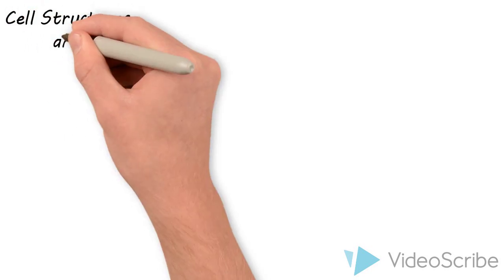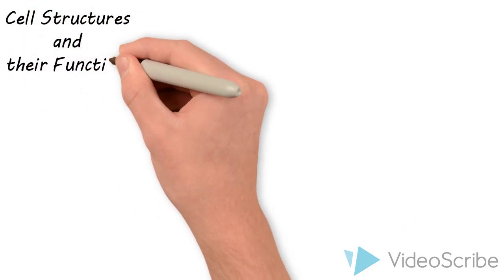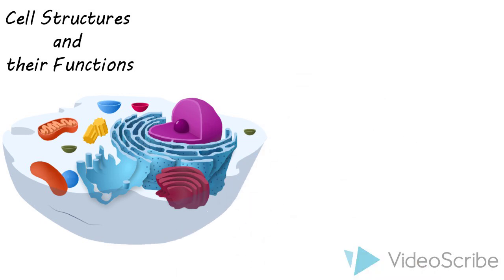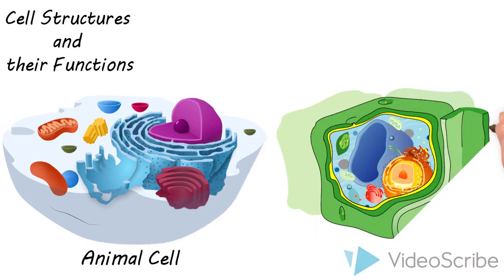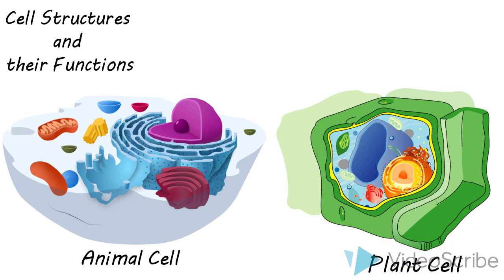Thanks for stopping by the classroom today. Today we're going to talk about cell structures and their functions. We're going to look at two types of cells: an animal cell like this one and a plant cell like this one. A lot of similarities but a few differences.